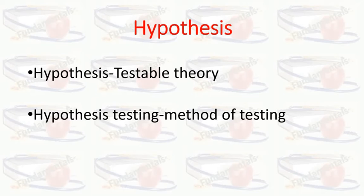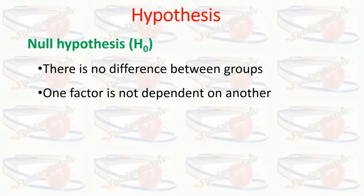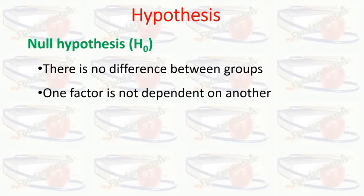Hypothesis is a testable theory, and hypothesis testing is the method of testing whether hypotheses regarding a population are likely to be true. When we conduct a study or any research, we make two types of hypothesis: one is the null hypothesis, represented by H₀, and the other is the alternate hypothesis.